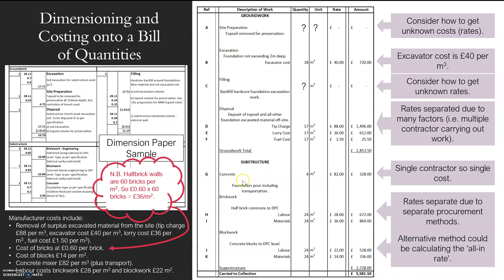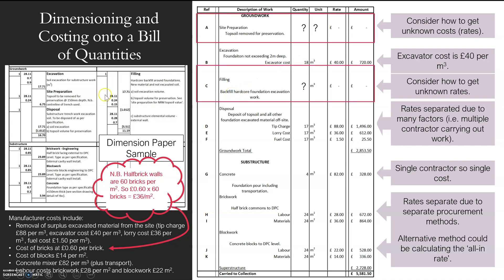All the information within site preparation, excavation, and filling is there. All I need to do is basically transpose from my dimension paper over to the bill. So my quantities which I've measured — my site preparation, my topsoil removal — I've actually got over here the filling, the topsoil volume.